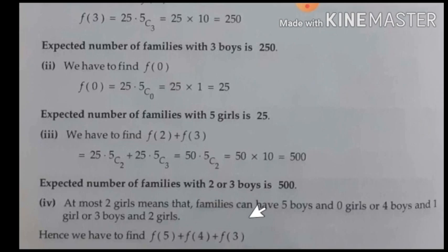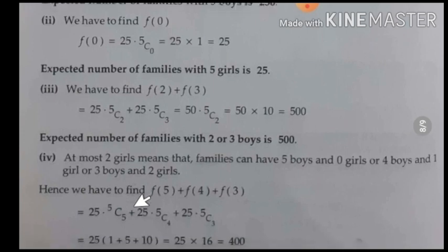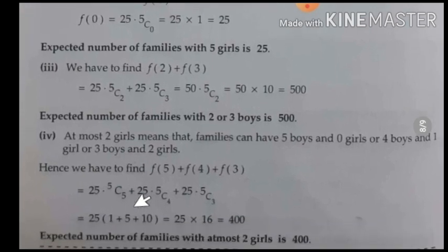For the fourth condition, at most 2 girls means there can be 0, 1, or 2 girls, corresponding to 5, 4, or 3 boys respectively. Since X is defined as number of boys, we compute F(5) + F(4) + F(3). Substituting X=5, 4, 3 into the formula, the expected number of families with at most 2 girls is 400.